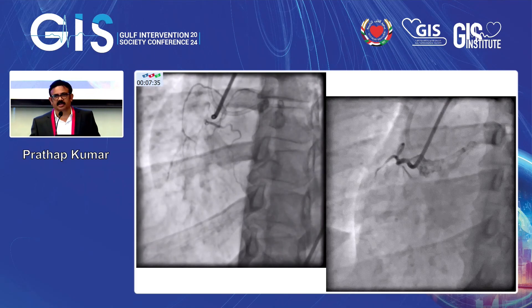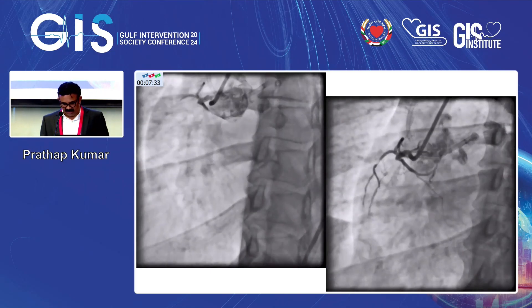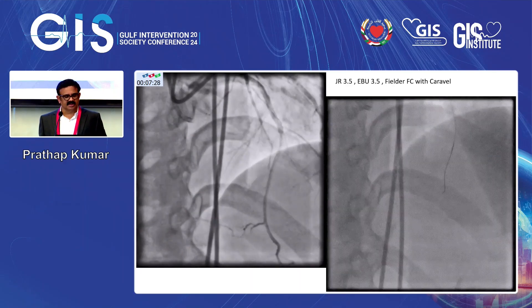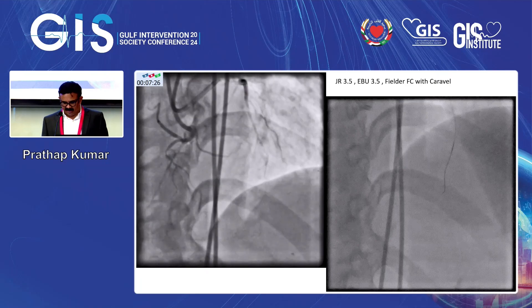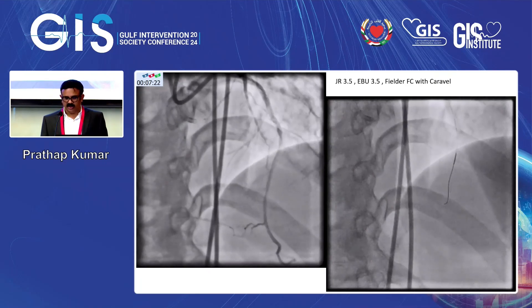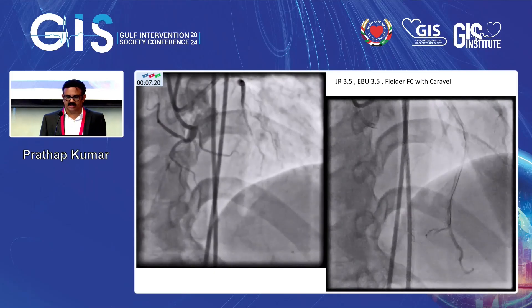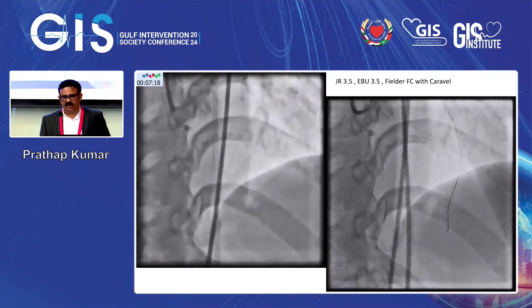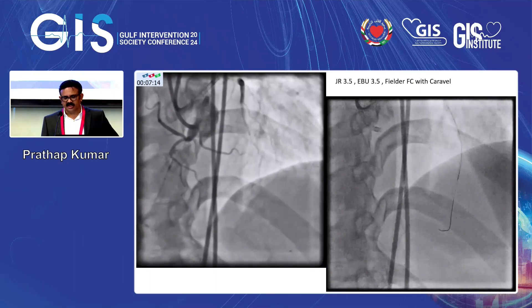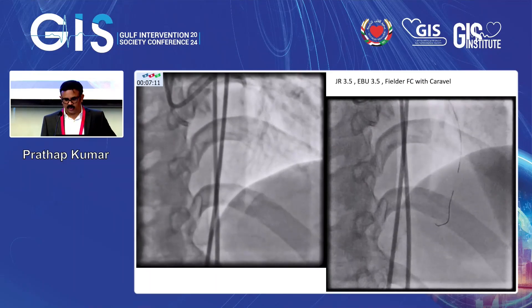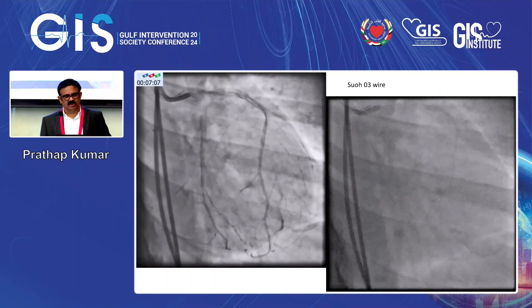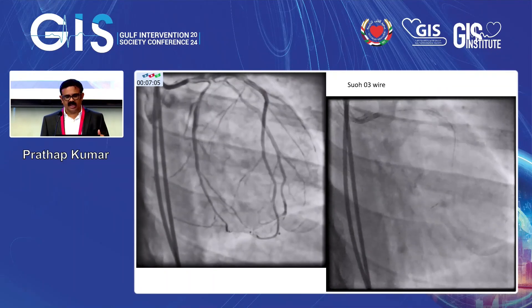They attempted antegrade CTO in the RCA and failed. It was looking like a simple one, but they failed. We saw retrograde connections very well. So we tried with a filter FC and a Caraville wire. The wire goes directly inside — you can see the real path that filter FC has taken inside, the wire goes easily.